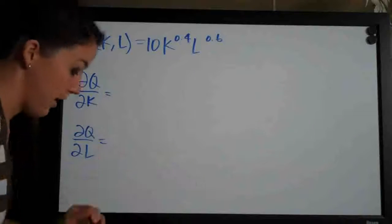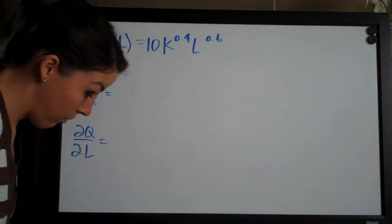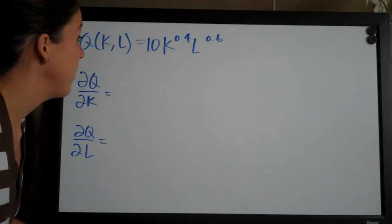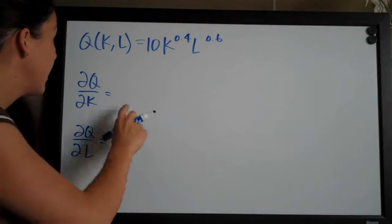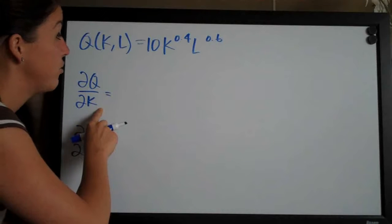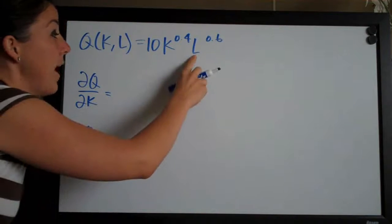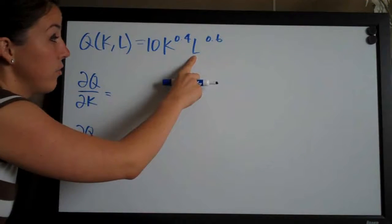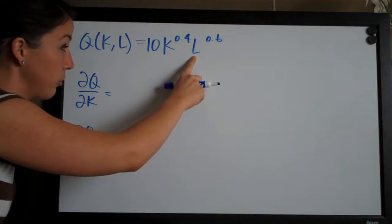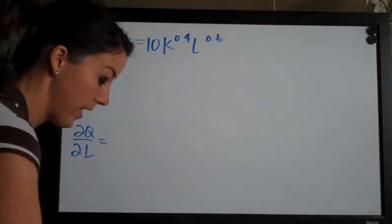And this problem is fairly simple. All we need to do is use the power rule because when we're taking the derivative with respect to k, l we're treating as a constant. So if we plug in a number for l like 2, what do we have?